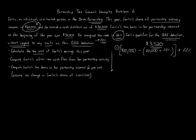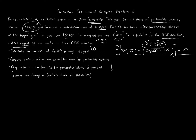That's the first answer, and honestly that's the hardest part. So question one: what is the tax cost of Garlic's earnings this year from the partnership? It's three thousand five hundred twenty dollars. Now we go to the second question — compute Garlic's after-tax cash flow from her partnership activity.